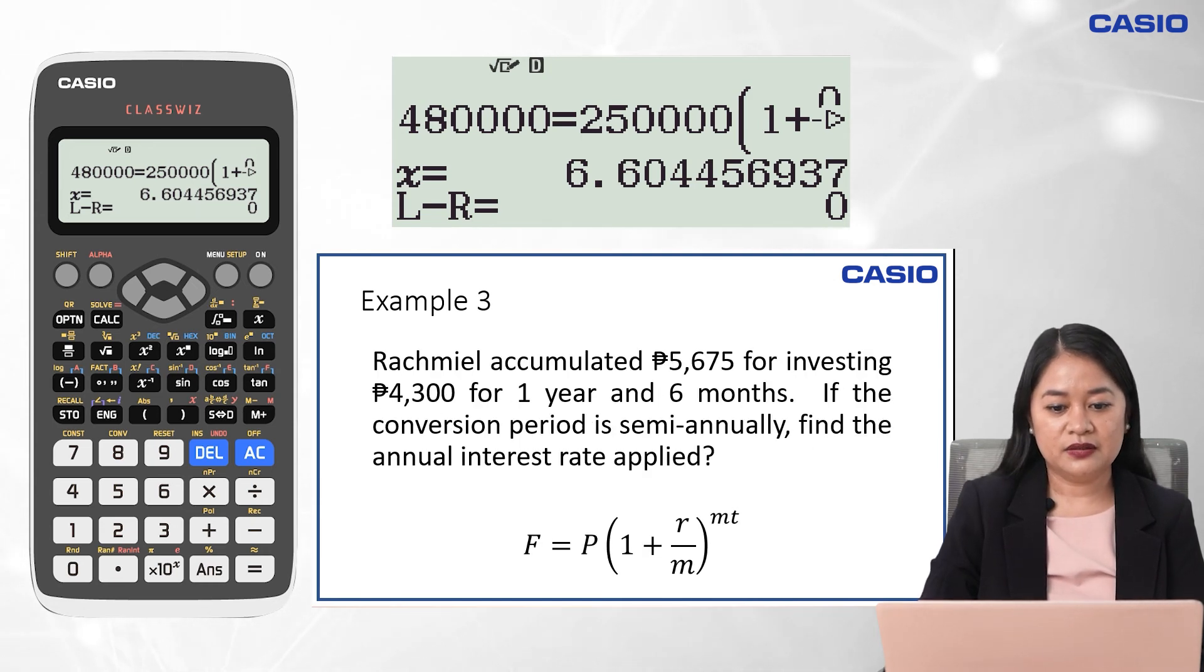Now let us try this example. So here, the given are 5,675, which is the future value, 4,300 pesos, the present value or the principal. And then for the period of time, this is 1.5 years. So we are looking for the annual interest rate, r.